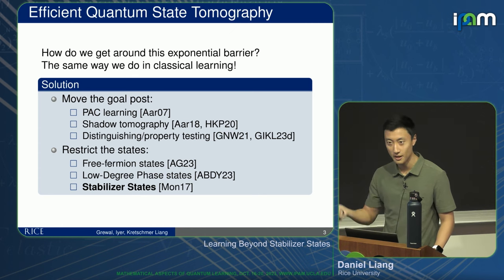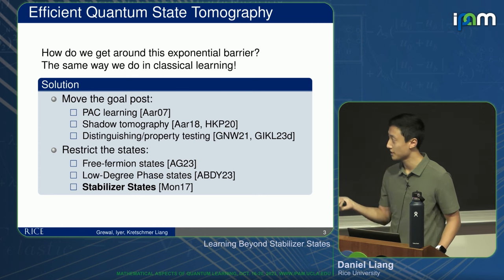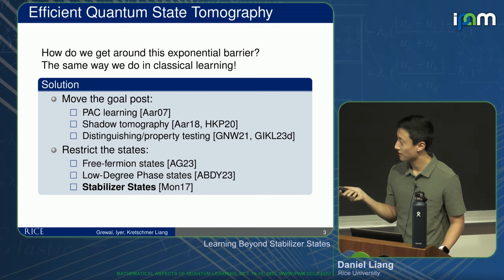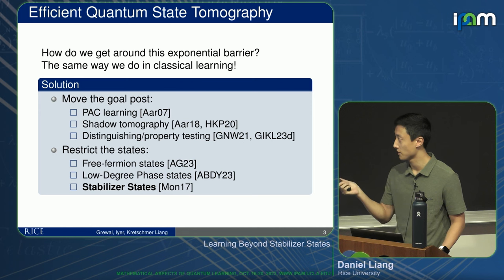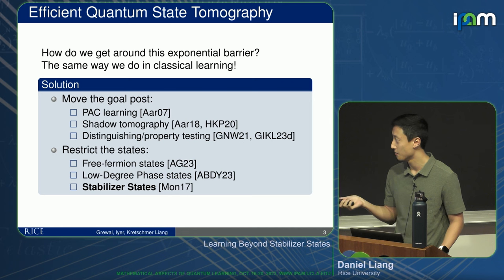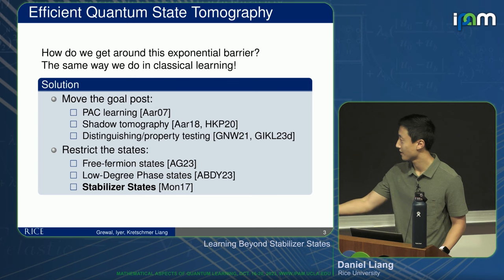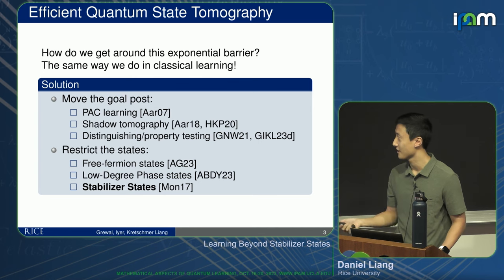One option to get around the barrier is to look at a specific class of states. We have time-efficient learning algorithms for free fermion states, low-degree phase states, and stabilizer states. I'm going to be talking more about stabilizer states.